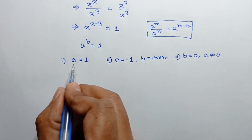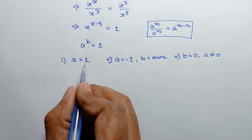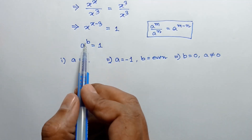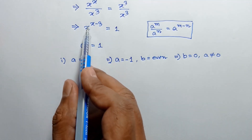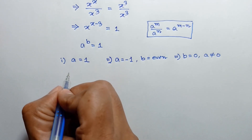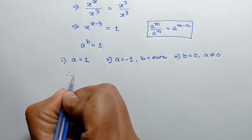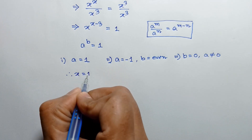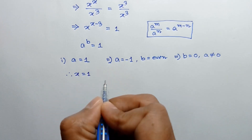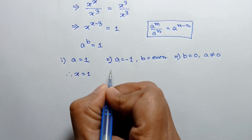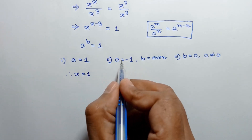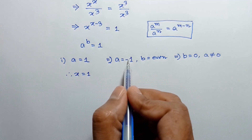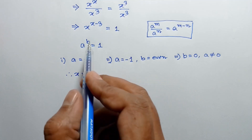For the first case, a is 1, so comparing these two we can write x is equal to 1. So the value of x is equal to 1.